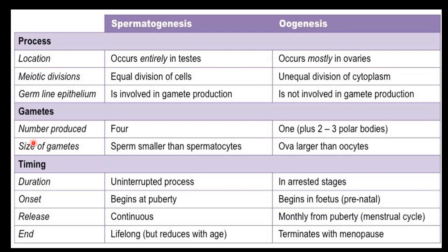Now we will see the differences between spermatogenesis and oogenesis. Spermatogenesis happens in the testis; oogenesis happens in the ovaries. Meiotic divisions are always equal divisions in spermatogenesis, whereas it is unequal division in oogenesis, because polar bodies are formed which are very small, and cytoplasm is transferred to the oocyte.